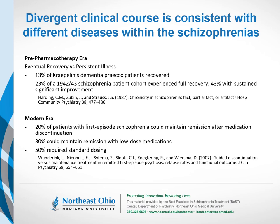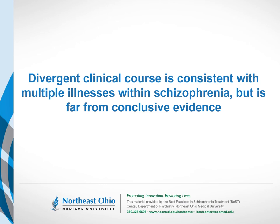Although divergent clinical course is consistent with the presence of multiple diseases within schizophrenia, it is far from conclusive. A valid alternative interpretation would be that the ones who recover simply have a more mild form of the same illness as the ones who had more difficult or persistent courses.